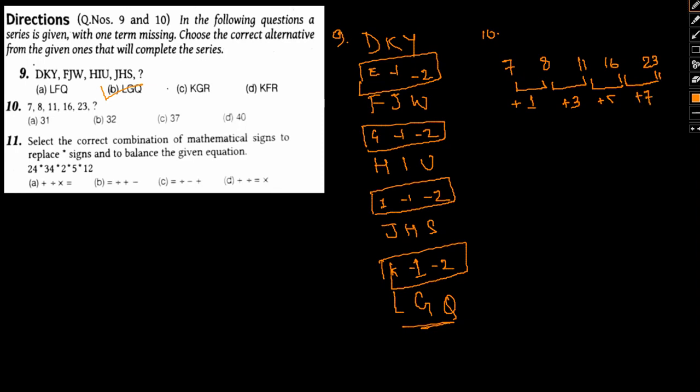This is plus 1, plus 3, plus 5, plus 7. So what should the next one be? See, odd, odd, odd, odd. And therefore plus 9. So it should be 32. So 32 will be the answer. Easy enough, this was again a very easy question.